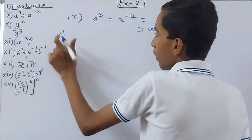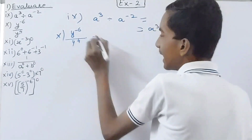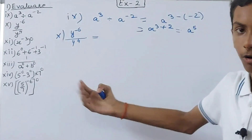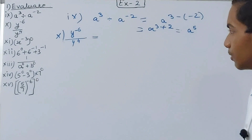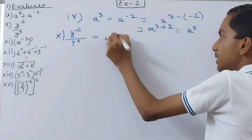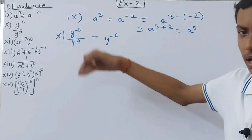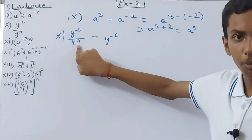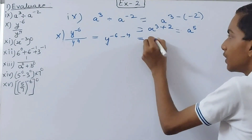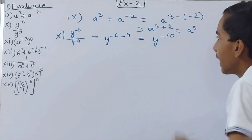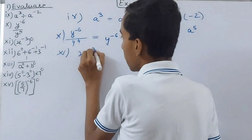The 10th part is y to the power minus 6 upon y to the power 4. 'Upon' means division. When written in fractional form, subtract the denominator's power from the numerator's power: minus 6 minus 4 equals minus 10. So the answer is y to the power minus 10.